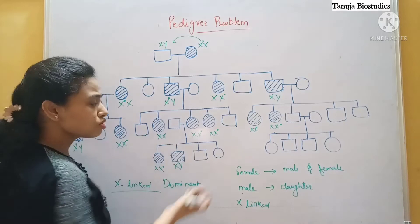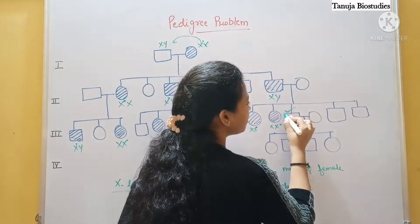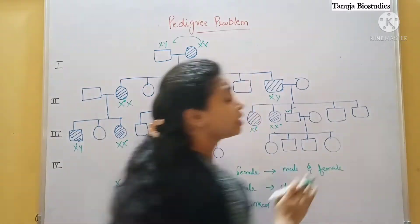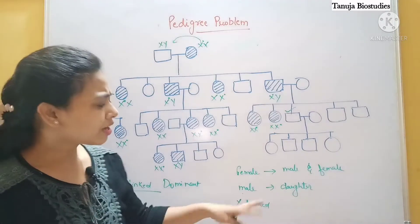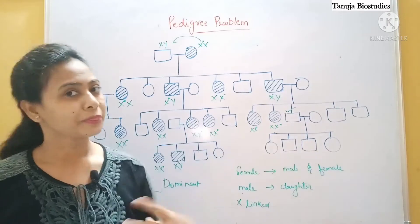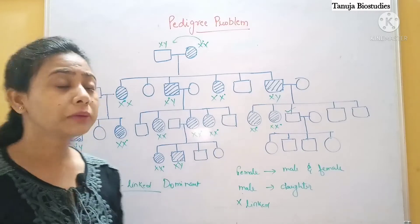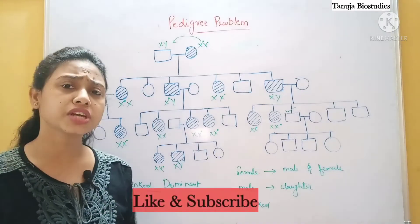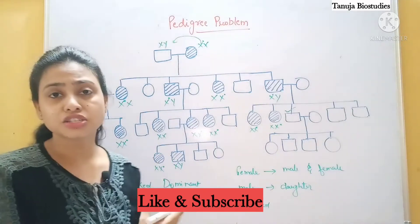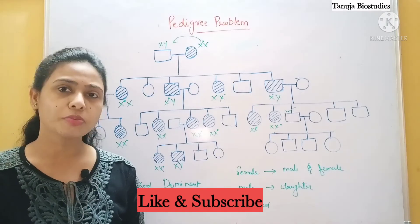One more thing: this male is unaffected and the female is also unaffected, and all her children are also unaffected - so there is no chance of a recessive trait appearing in the children. I hope the chart is clear to all of you. In the next part I will discuss some more pedigree problems. If you really understood this video, please hit the like button, subscribe, and share this channel. Thank you so much for watching.